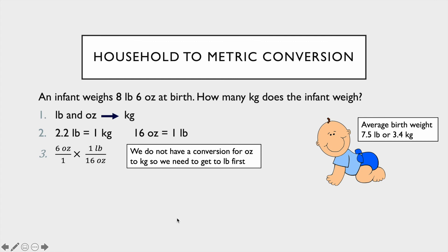16 ounces in a pound, and we're going to cancel out the ounces and end up with the pounds, and we get 0.375 pounds.